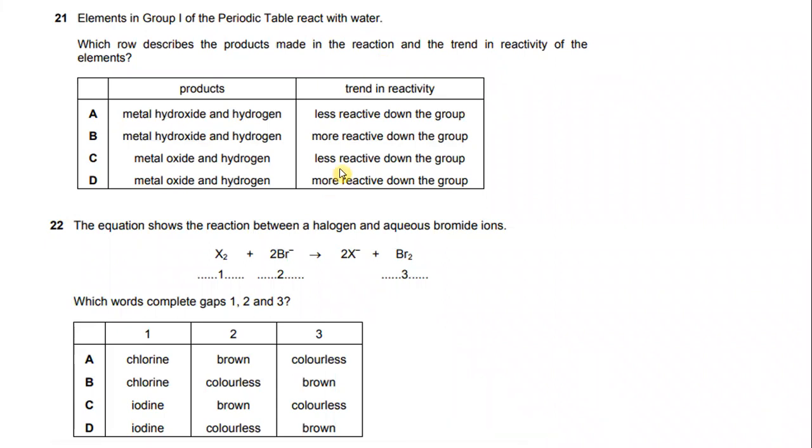Question number 21. Elements in group 1 of the periodic table react with water. Which row describes the products made in the reactions and the trend in reactivity of the elements?